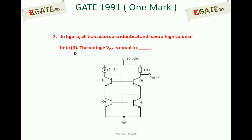Look at the diagram. All the transistors are identical and have a high value of beta. The voltage VDC is equal to the voltage across this point for this circuit. Given that all four transistors are identical and have a high value of beta.